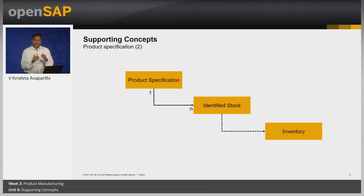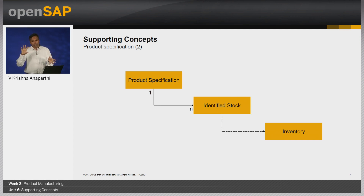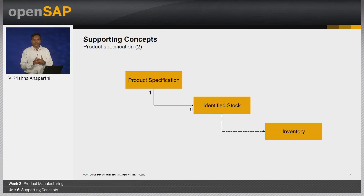Most importantly, an identified stock which is assigned a product specification can only be consumed against a requirement with the same product specification — for example, requirements like customer orders. Having understood batch management using identified stocks and product specification and the stock linkage via identified stock, let us execute a process in the system to issue batch-managed stock as well as product specification-specific stock.